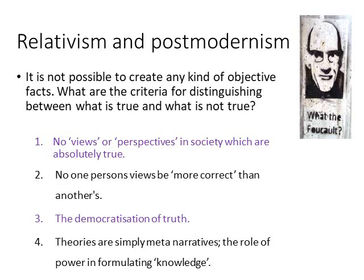Therefore, it is not possible to create any kind of objective fact, as post-modernists such as Michel Foucault would argue. What are the criteria for distinguishing between what is true and what is not true? And how can we know those are good and absolutely true criteria? We cannot know those things. Therefore, no views or perspectives are absolutely true, and no one person's views are more correct than another's — they are just different. This is the democratisation of truth, where every individual has their own truth. Theories are simply meta-narratives, and Foucault warns us: who decides what is true? Who decides the meta-narrative or the paradigm? It will be the powerful. There is a role for those in power to formulate what counts as knowledge, which is problematic for the underdogs and powerless in society who can never formulate knowledge.